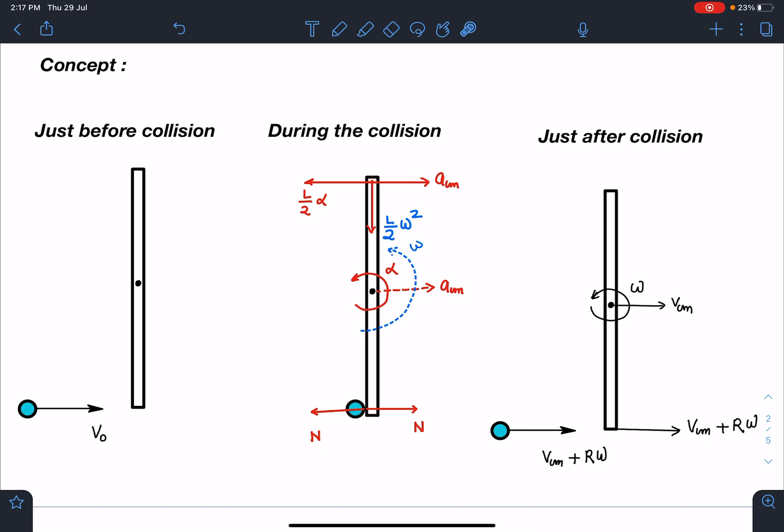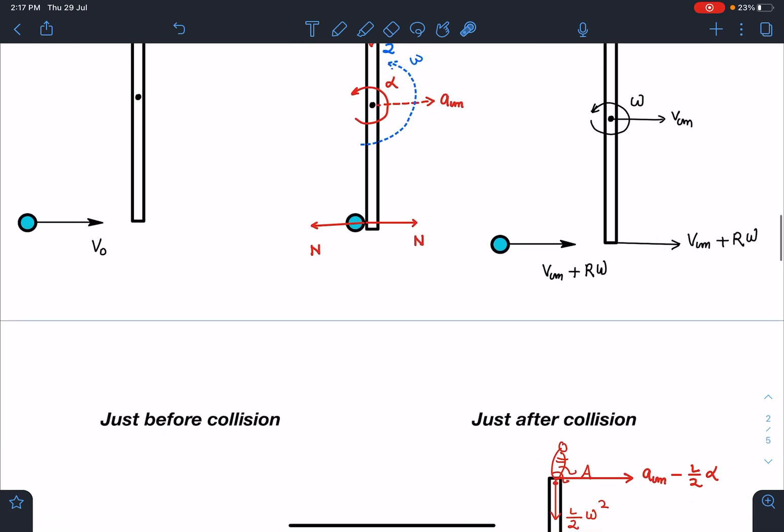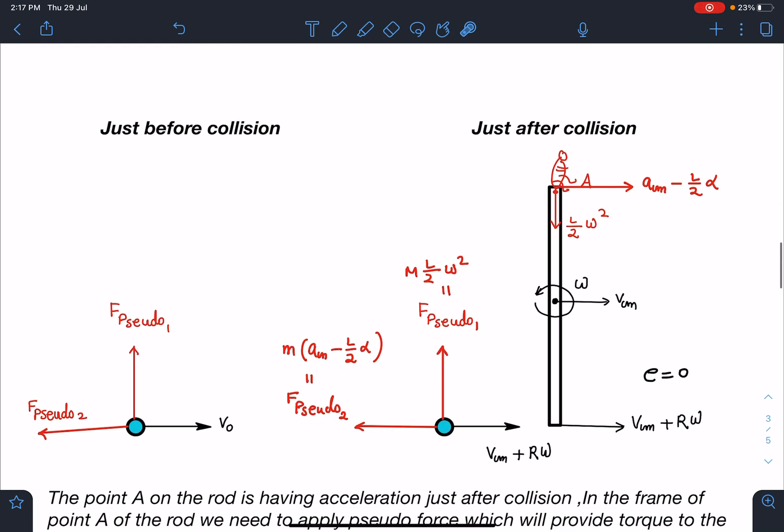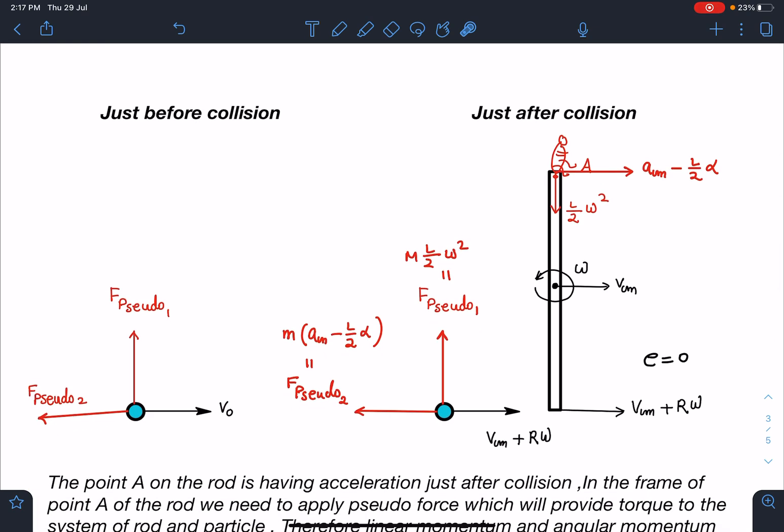When we observe with respect to point A, during the motion you will find there will be pseudo force. Net acceleration of this point A is ACM minus l by 2 alpha, and this is l by 2 omega squared towards the center. When we are going to observe it, we must apply this pseudo force.